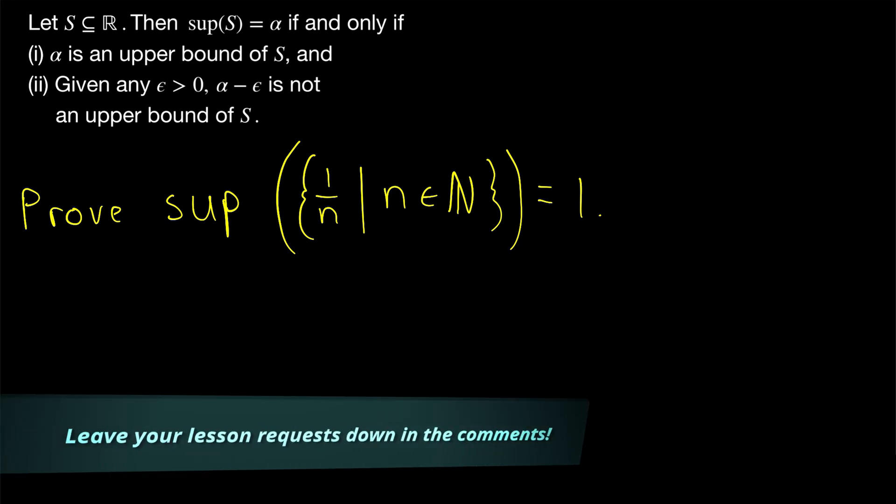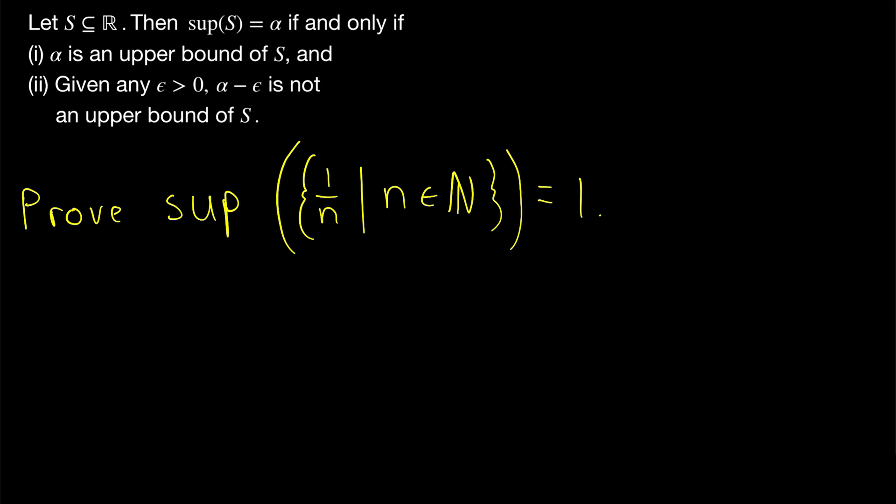Recall that the original definition of supremum of a set is that the supremum, if it exists, is an upper bound that is less than or equal to any other upper bound. It's the least upper bound of the set. This equivalent definition starts the same way that the supremum must be an upper bound, and then it says that if we reduce the supremum at all by subtracting any positive real number epsilon, we will no longer have an upper bound. Because, of course, the supremum is the least upper bound, so we can't reduce it and get another upper bound.